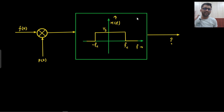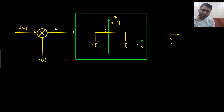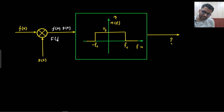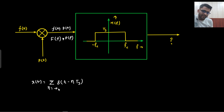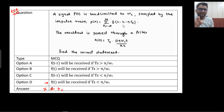This diagram you would have already seen many times in your communication system or signal system subject. In time domain they are being multiplied, and in frequency domain they will be convolved with P(F). Usually which kind of impulse train do we take? Let us call it X(T). Usually we take the impulse train to be δ(T - nTs). This kind of impulse train we usually take. But this time the pulse train is shifted by 2.